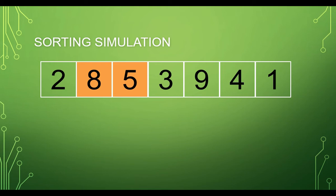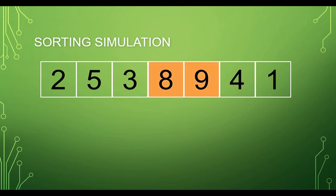The next step is to compare the third element with the second element. If the element on the left side is greater than the right side, then swapping is performed. The next step is to compare the third element with the fourth element. If the left side element is greater than the right side element, then it will perform swapping — so 3 will be placed at the left and 8 at the right. Then we compare the fourth element with the fifth element; since the fourth is less than the fifth, swapping is not needed.